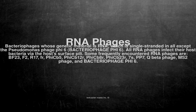All RNA phages infect their host bacteria via the host's surface pili. Some frequently encountered RNA phages are: BF23, F2, R17, FR, PHICB5, PHICB12R, PHICB8R, PHICB23R, 7s, PP7, Q-beta phage, MS2 phage, and Bacteriophage-phi-6.